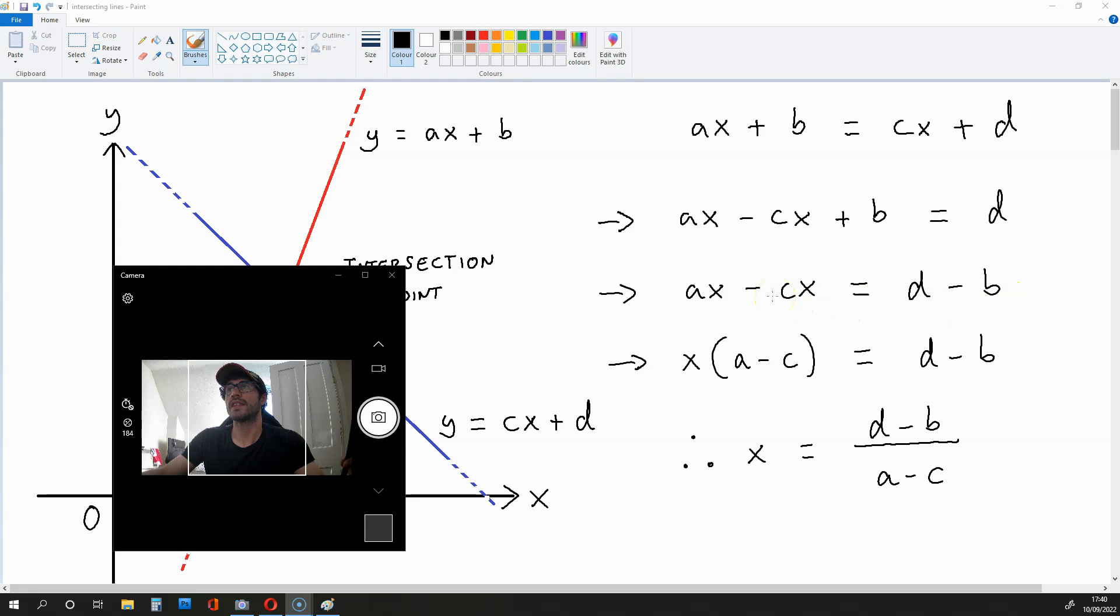From here, we use the distributive method to get X times A minus C is equal to D minus B. And this is going to mean that at the intersection point, X is going to be equal to D minus B over A minus C.